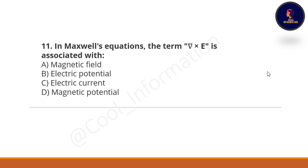Next question: in Maxwell's equations, the term ∇×E is associated with what? Option A: magnetic field. Option B: electric potential. Option C: electric current. Option D: electromagnetic potential. The correct option is A — magnetic field.